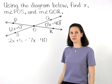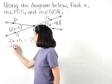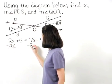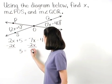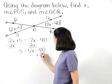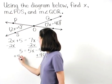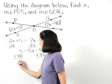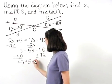Solving from here, we subtract 2x from both sides to get 5 equals 5x minus 40, and adding 40 to both sides, we have 45 equals 5x.